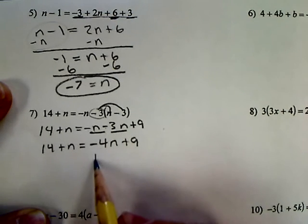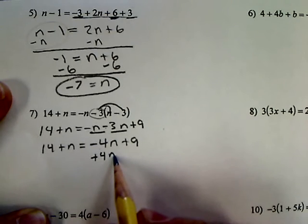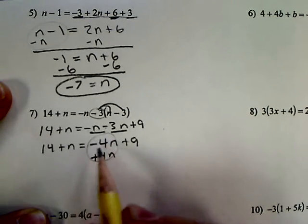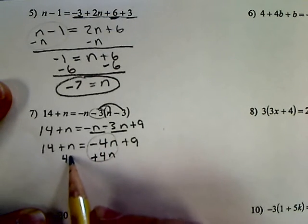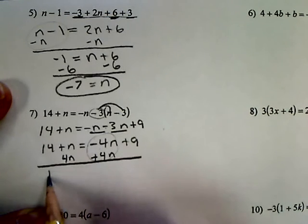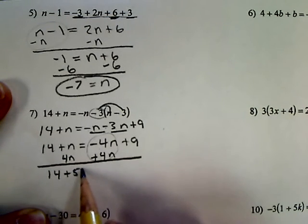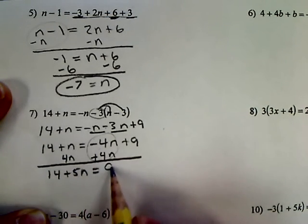So I'm going to add 4n to both sides. And I'll get rid of this negative 4 and put all my n's on one side. So 14 plus 5n equals 9.